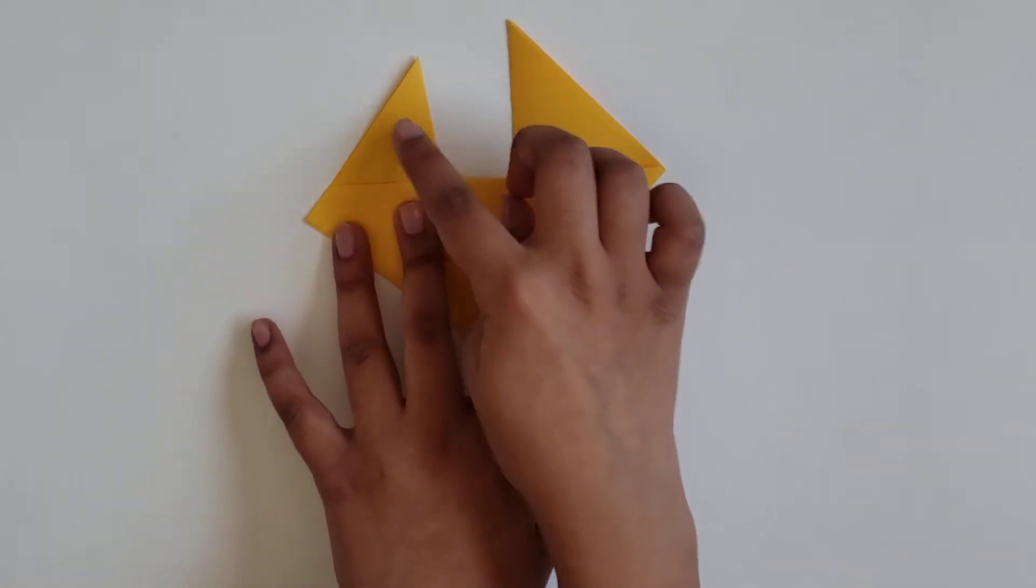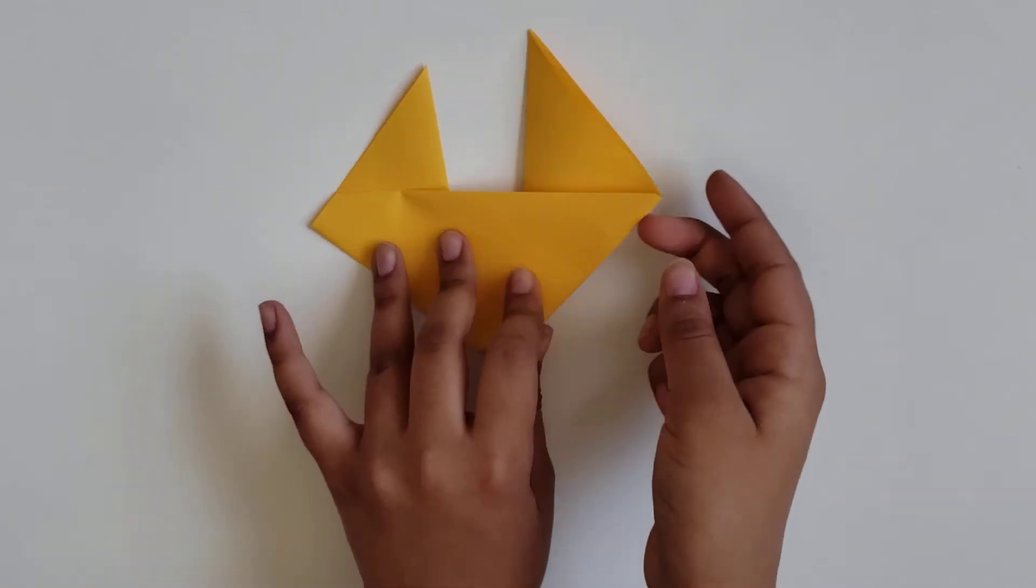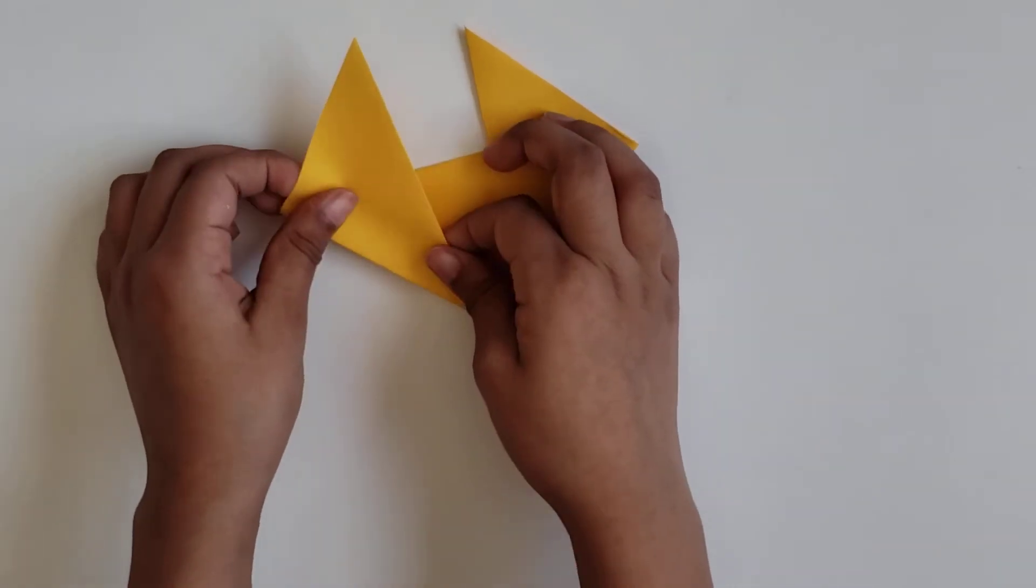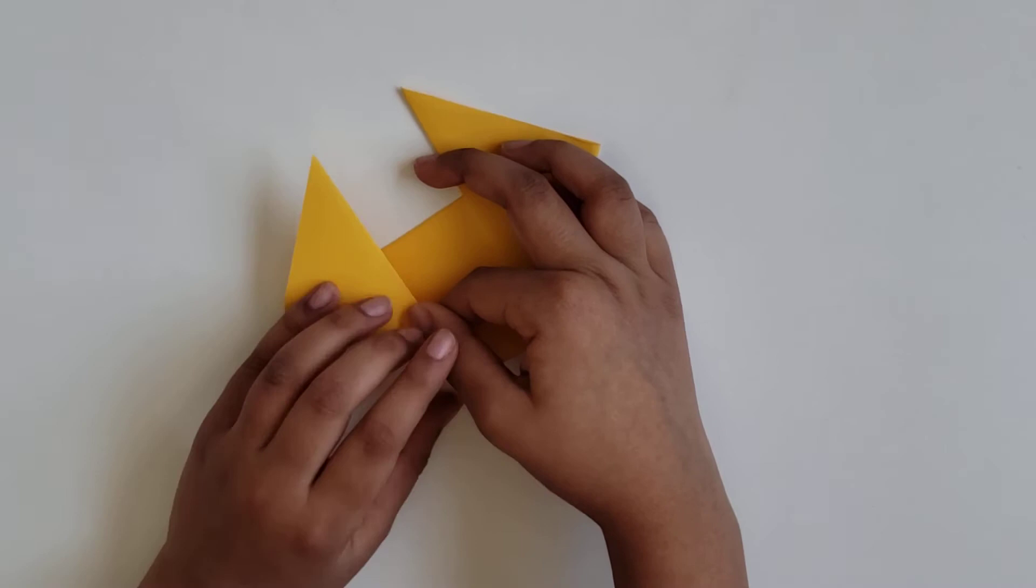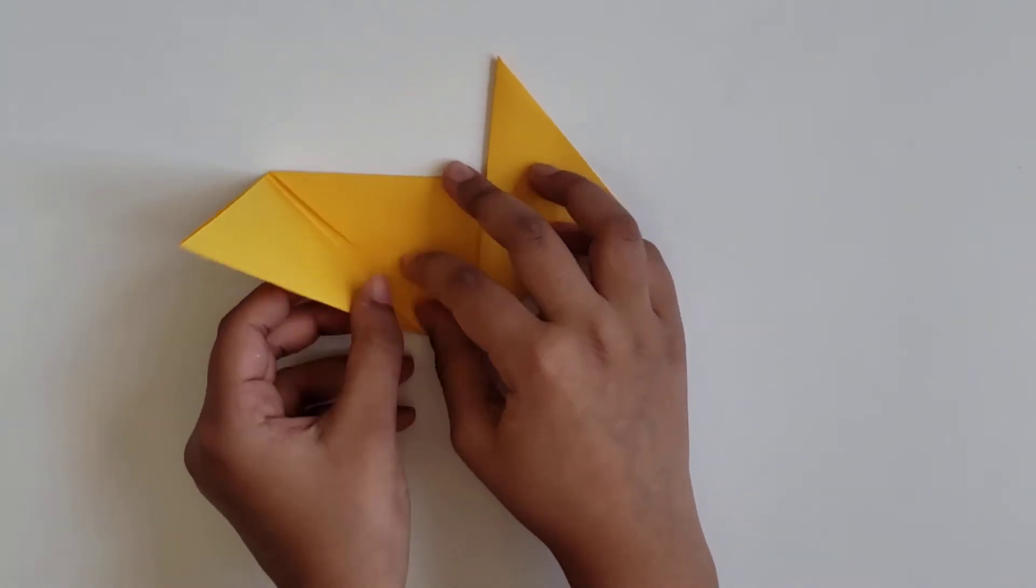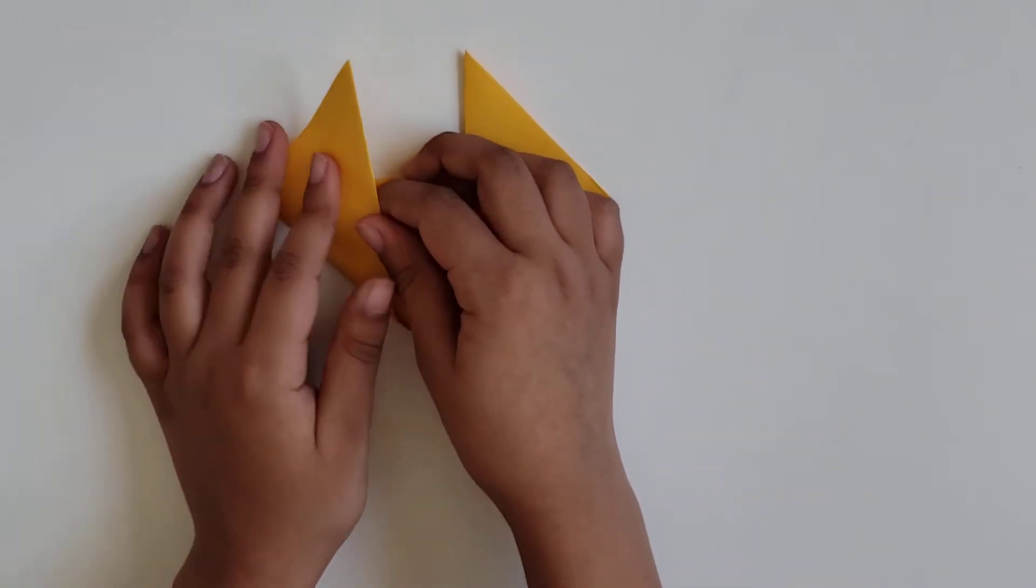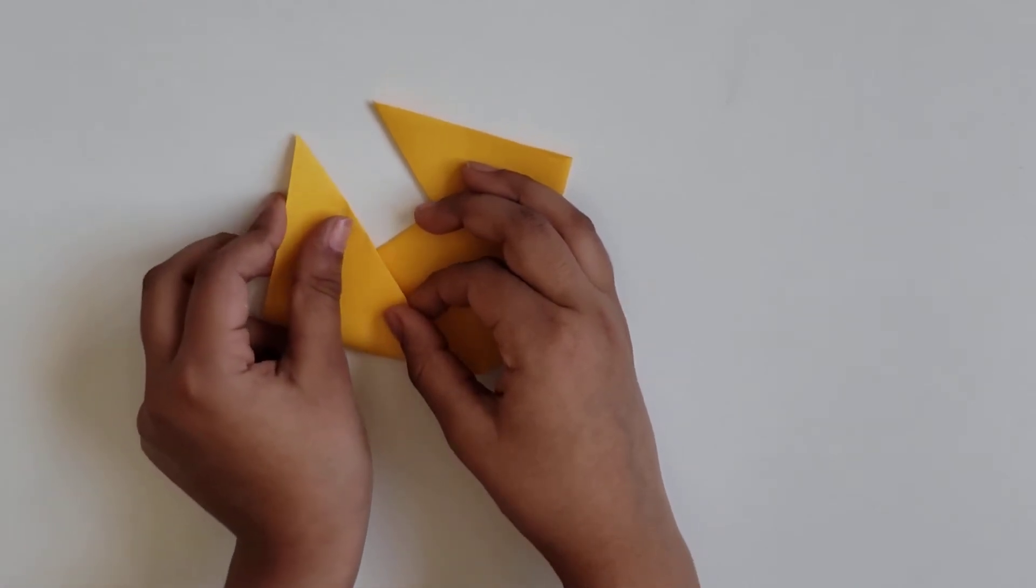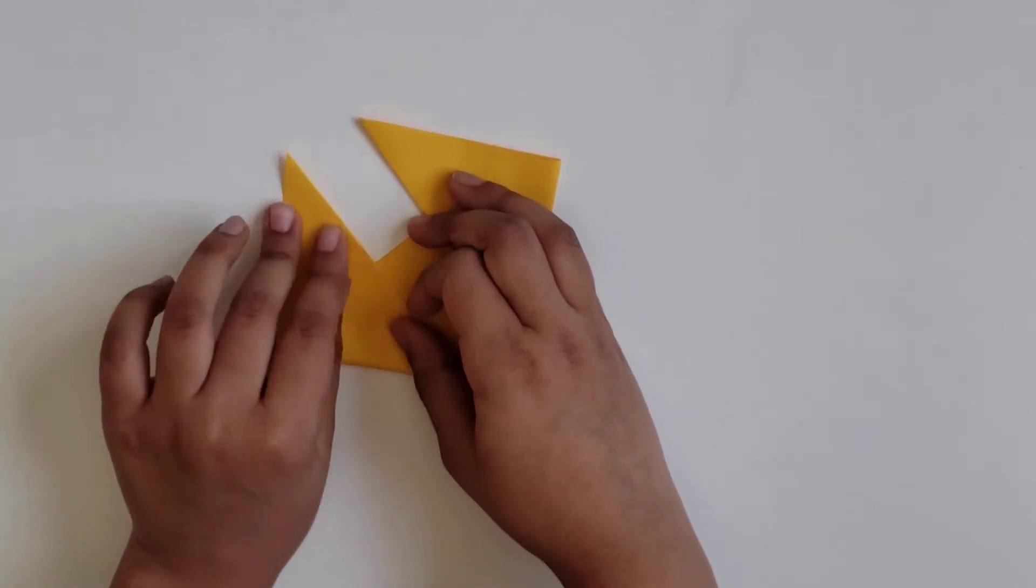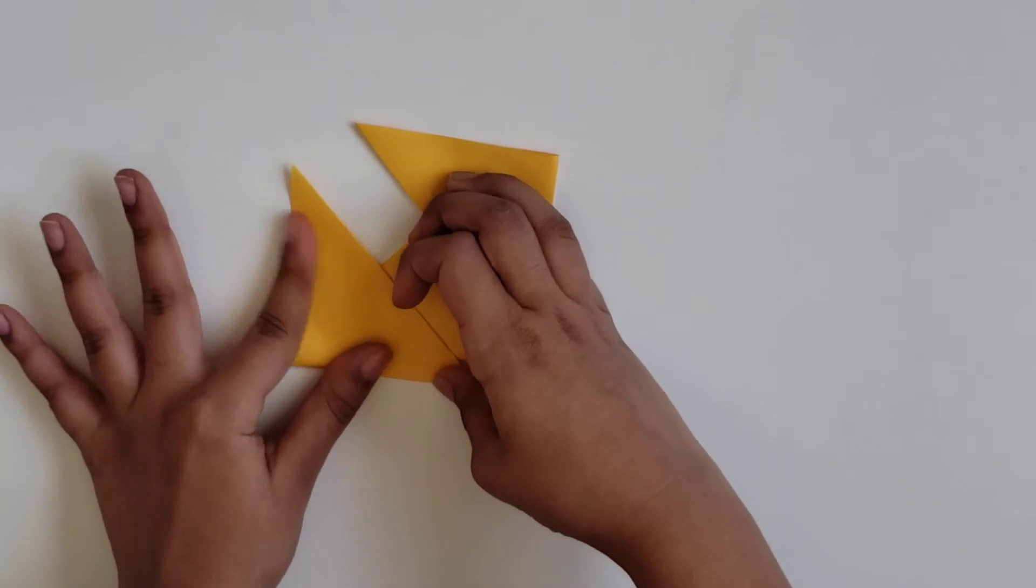Now, what you see is that this flap is a little smaller than this. You can adjust that by increasing or decreasing how far you folded your paper. I just want to make this a little smaller. And then crease.